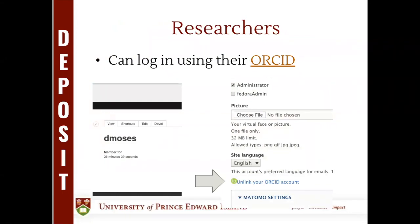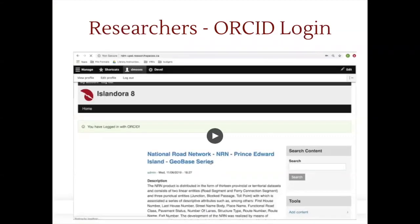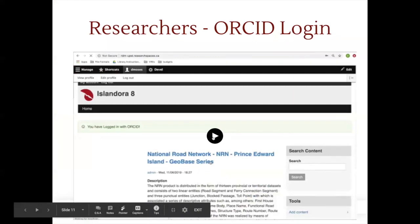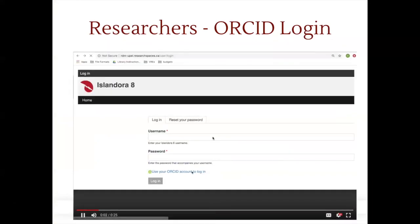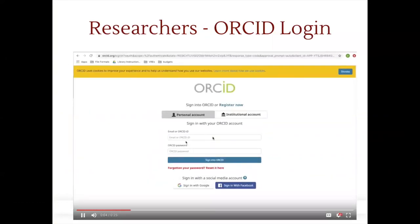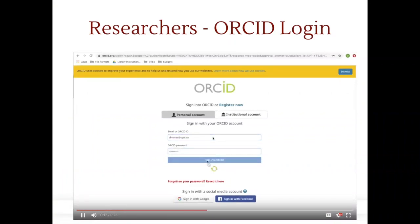One of the options for users to log into the system is that they can log in with their ORCID credentials. In order to do that, they first need to link their ORCID account — log in as yourself, then go to your profile and link your ORCID account. Thereafter, you can log in using ORCID. Here's a video: I clicked on 'log in using ORCID,' logged in with my username and password, and it goes back to our system and says you're logged in — welcome.